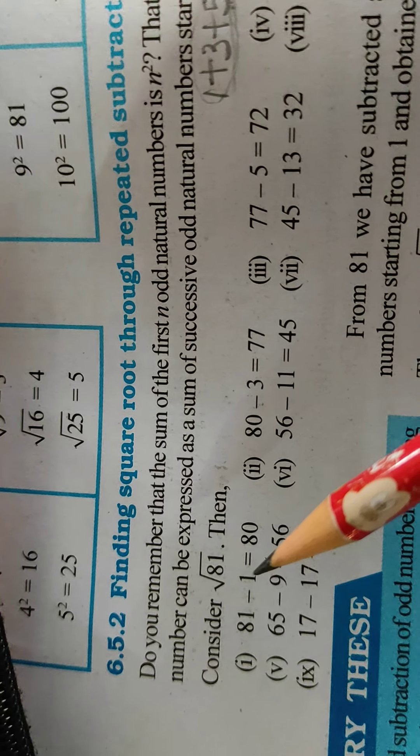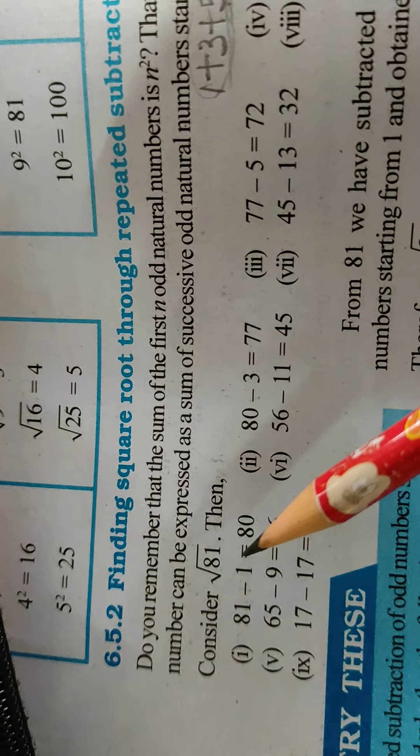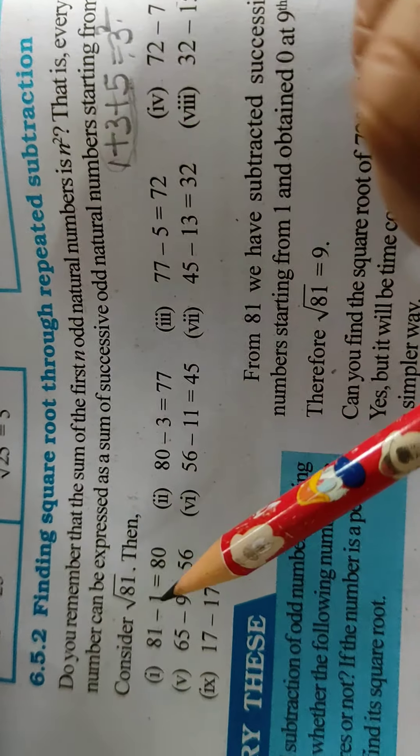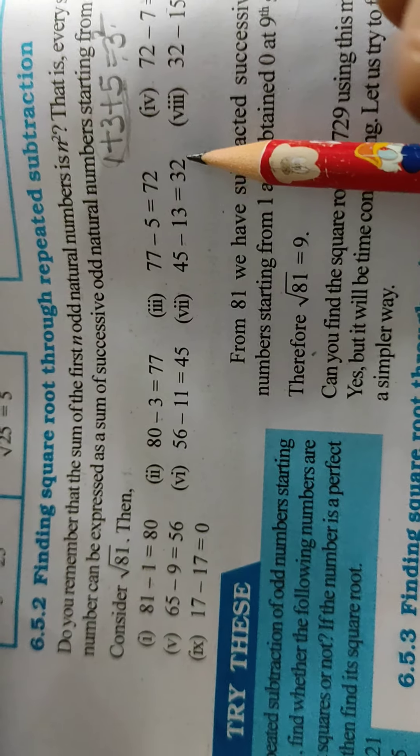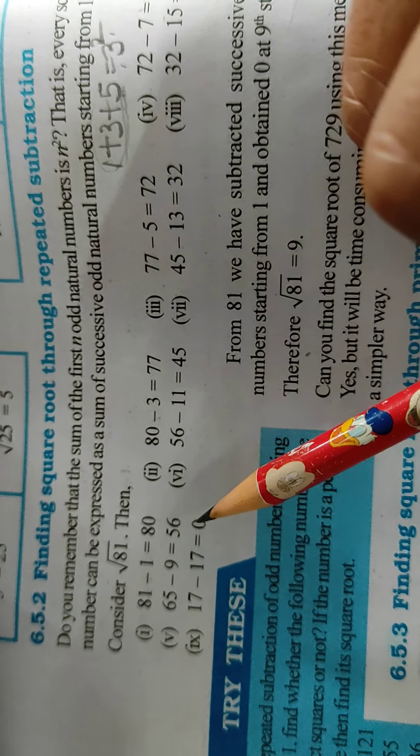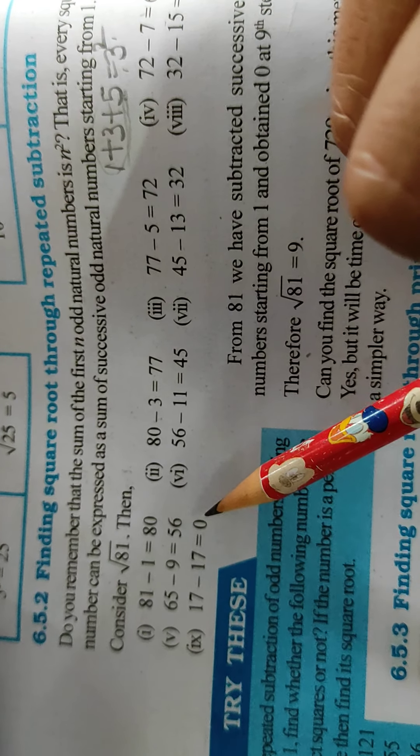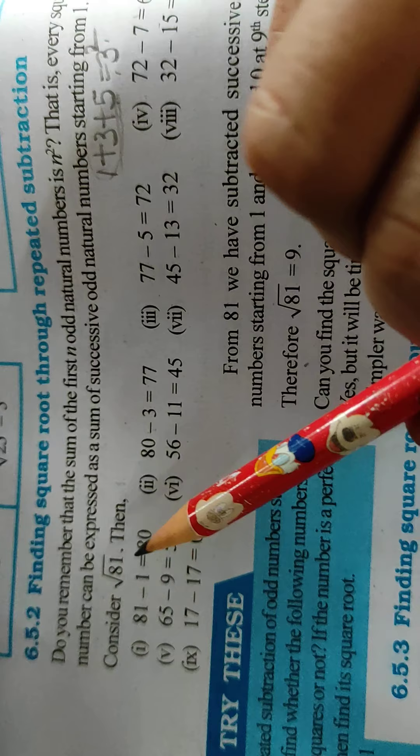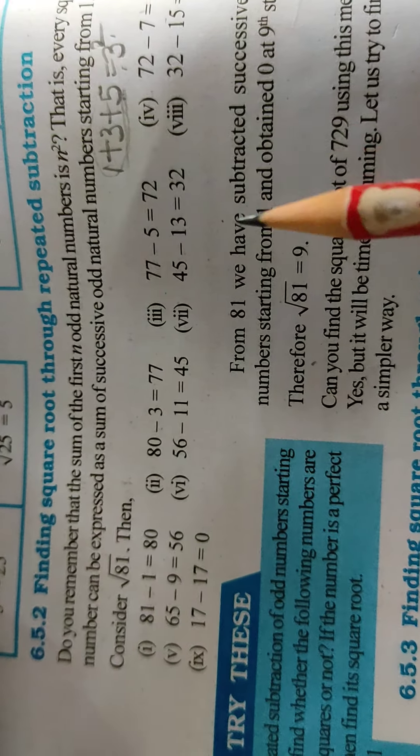In my previous video also we have done this. 1, then 3, then 5, then 7, then 9, then 11. In which term, in which step are we getting remainder as 0? 1, 2, 3, 4, 5, 6, 7, 8, 9. So square root of 81 will be 9. Clear?